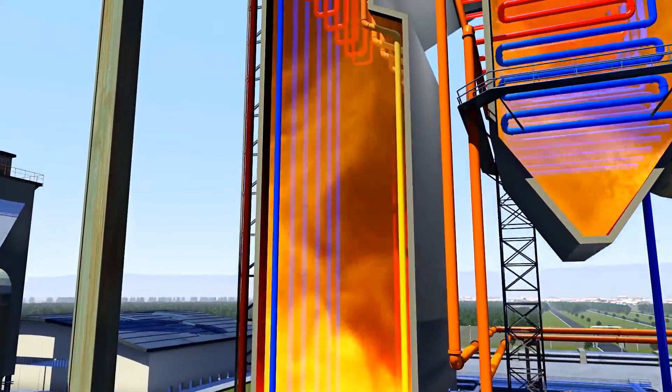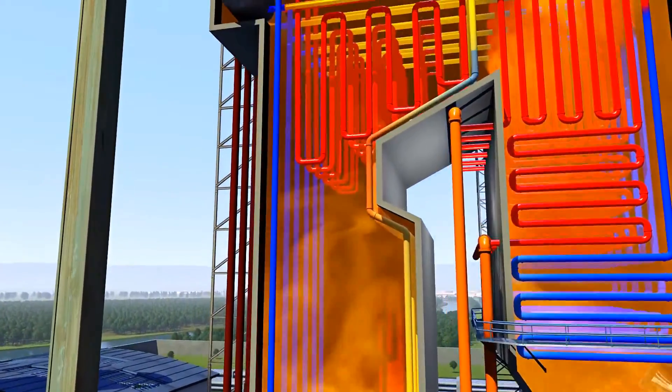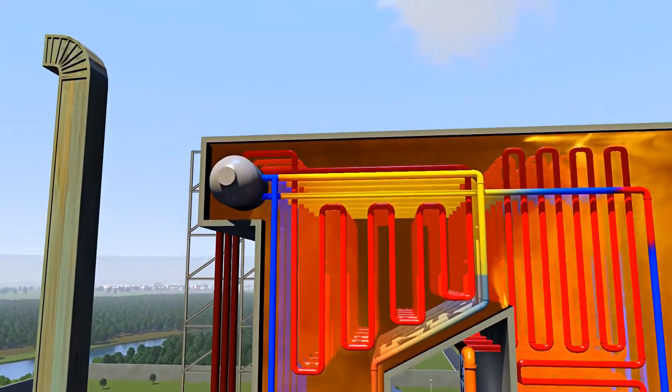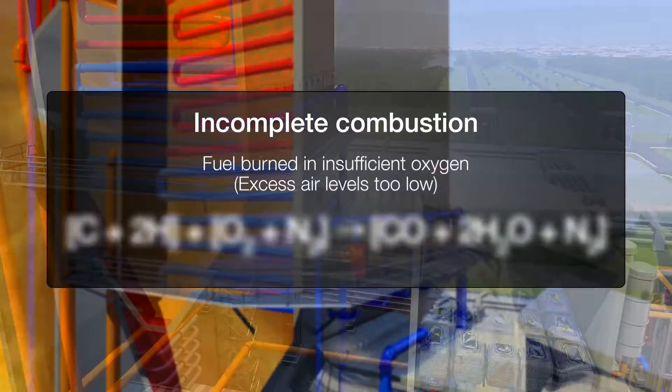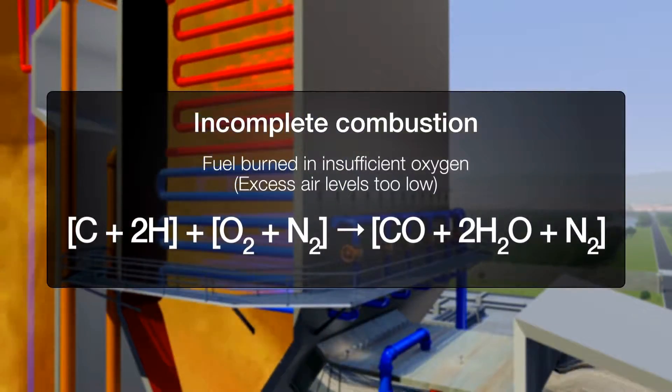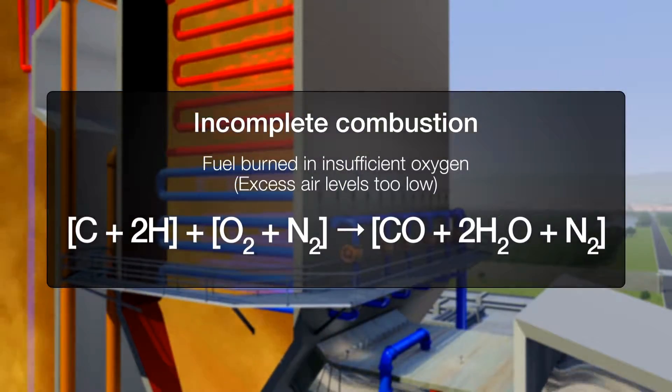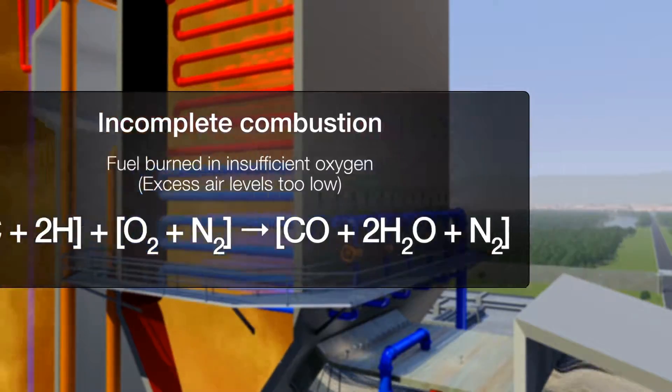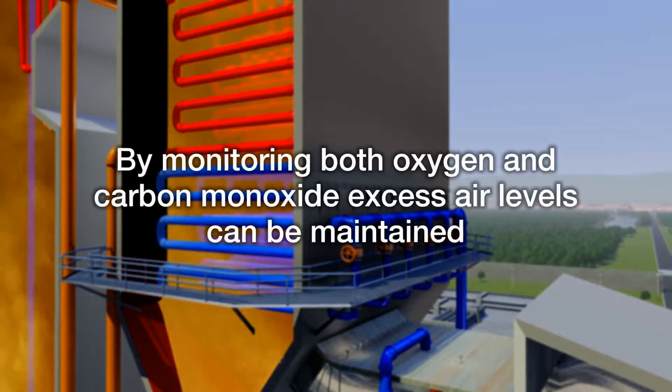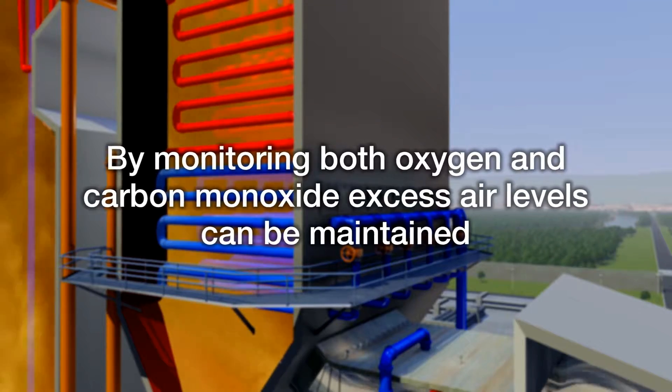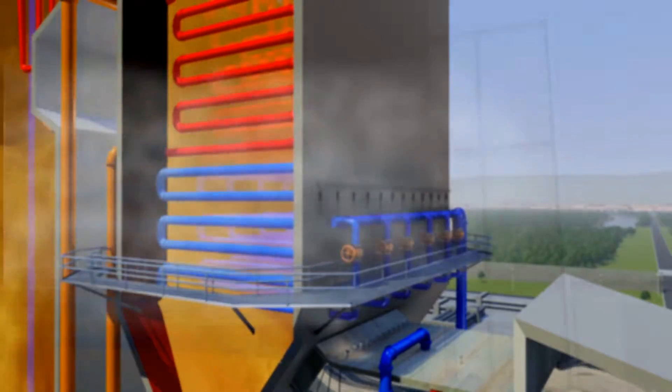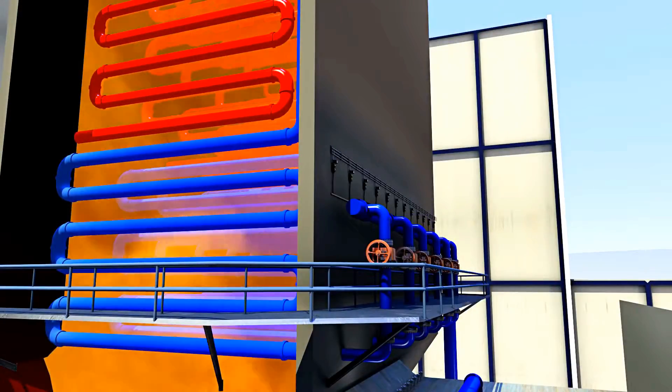Measuring for carbon monoxide provides an ideal means of compensating for these variations. Carbon monoxide levels will start to increase when the amount of oxygen is insufficient to allow complete combustion. By continuously balancing the two measurements against each other, it's possible to achieve and maintain the correct amount of excess air for optimum combustion, regardless of any of the variations mentioned earlier.